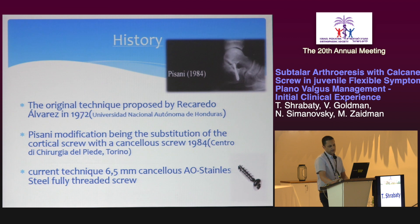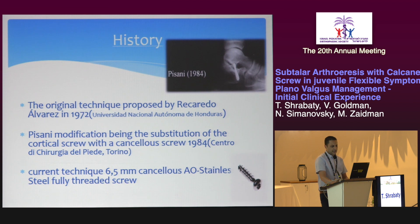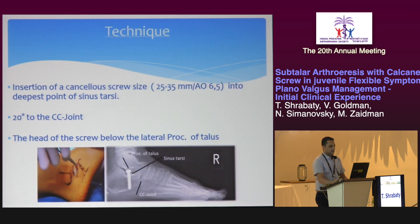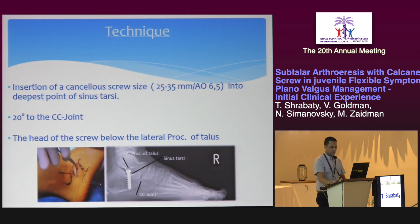The history of this procedure begins in 1972 in Honduras. Pisani made his modification through substitution of the cortical screw with a cancellous screw, and the current technique uses a 6.5 cancellous AO stainless steel fully-threaded screw. In our technique at Hadassah, we insert the cancellous screw, sized 25 to 35 millimeters, 6.5, into the deepest point of the sinus tarsi. It must lie 20 degrees to the calcaneocuboid joint, and the head of the screw lies, in optimal cases, below the lateral process of the talus.